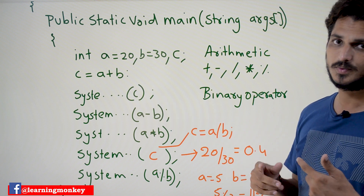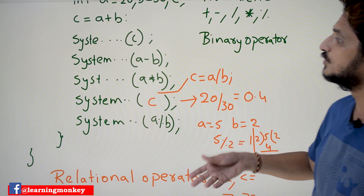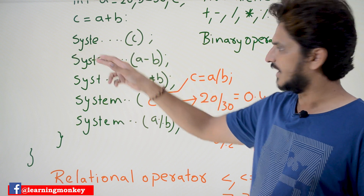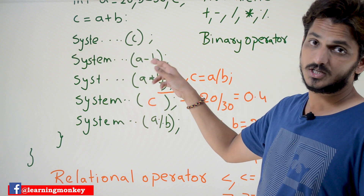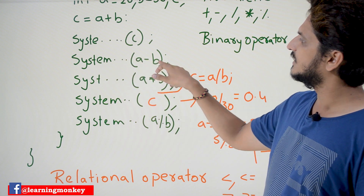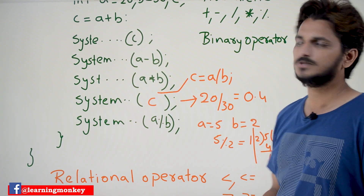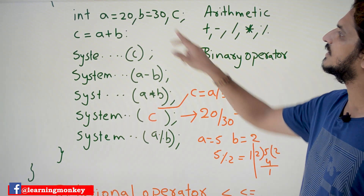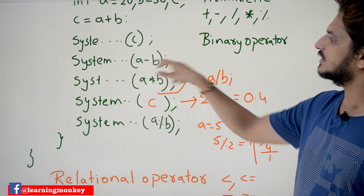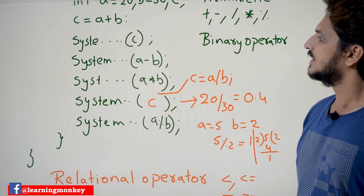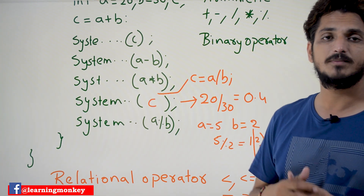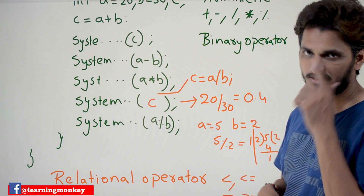This is the plus arithmetic operator. Similarly, we can directly write the operation inside the print statement so that the operation will be done and the output will be displayed. System.out.println of a minus b — a minus b means 20 minus 30, which is minus 10. The output it is going to display is minus 10. Similarly, if you want to do multiplication, a multiplied by b, 20 multiplied by 30 is 600.